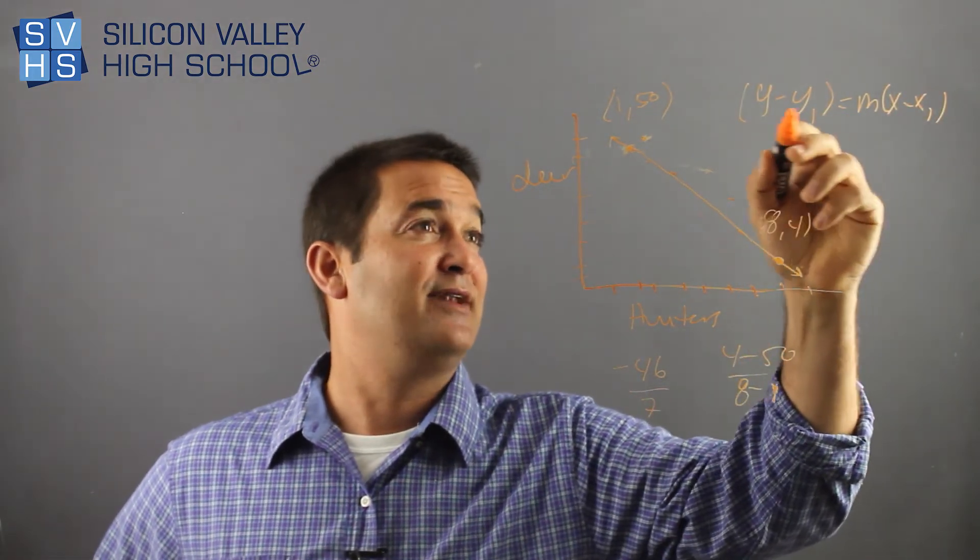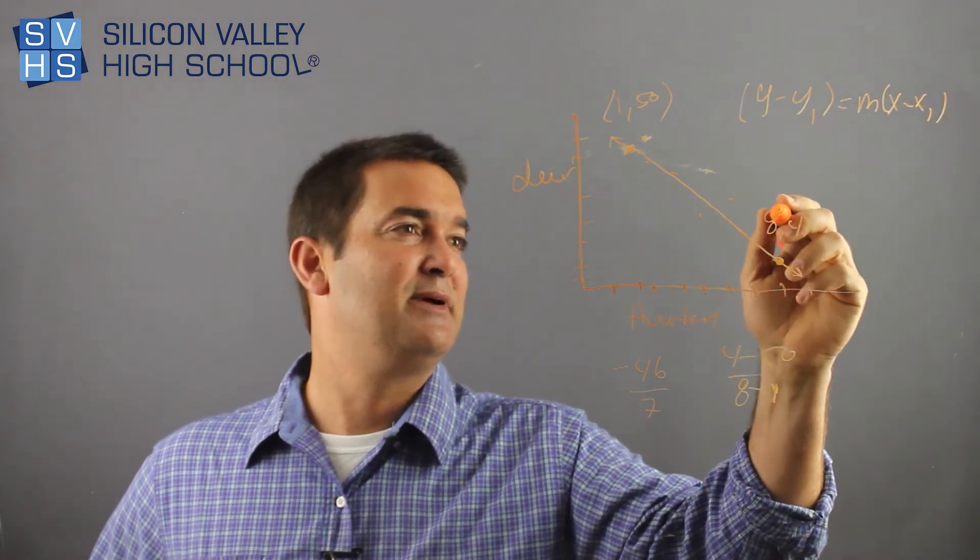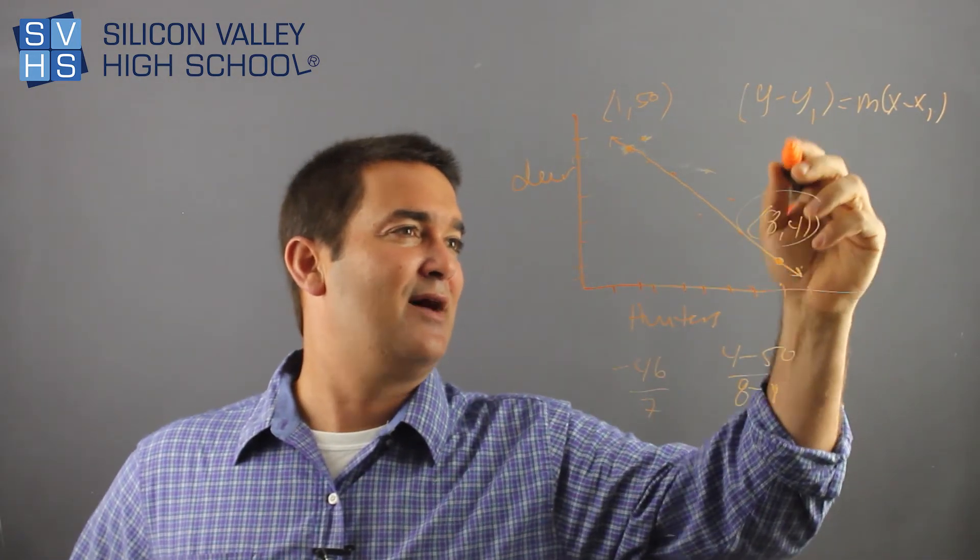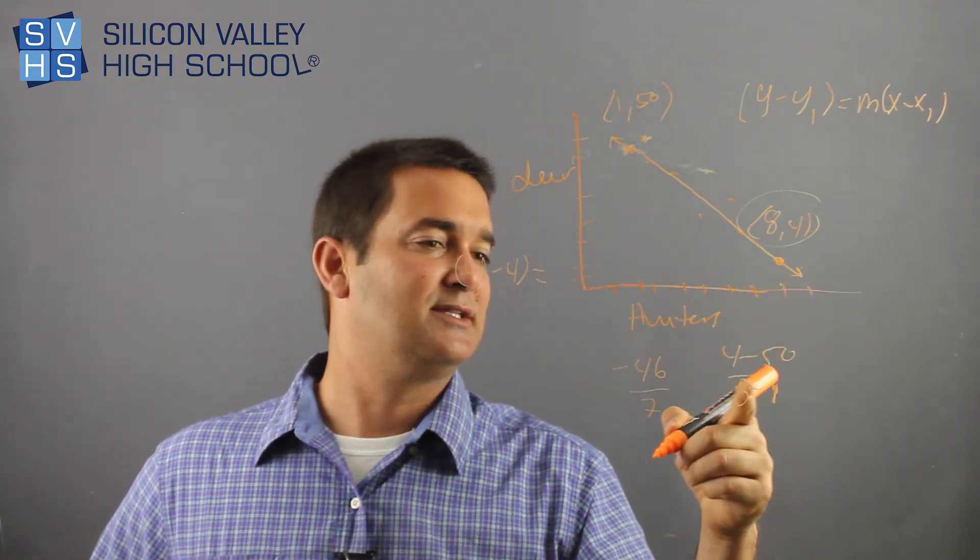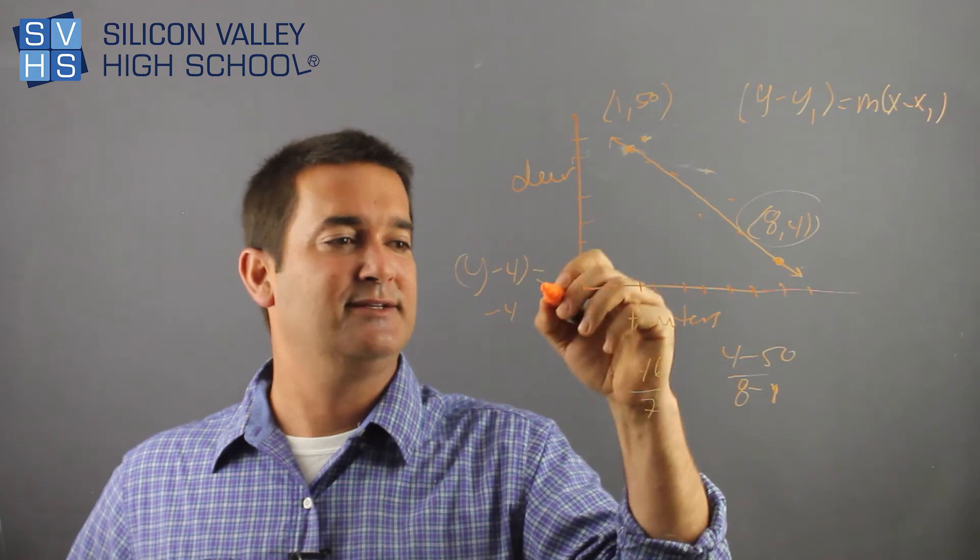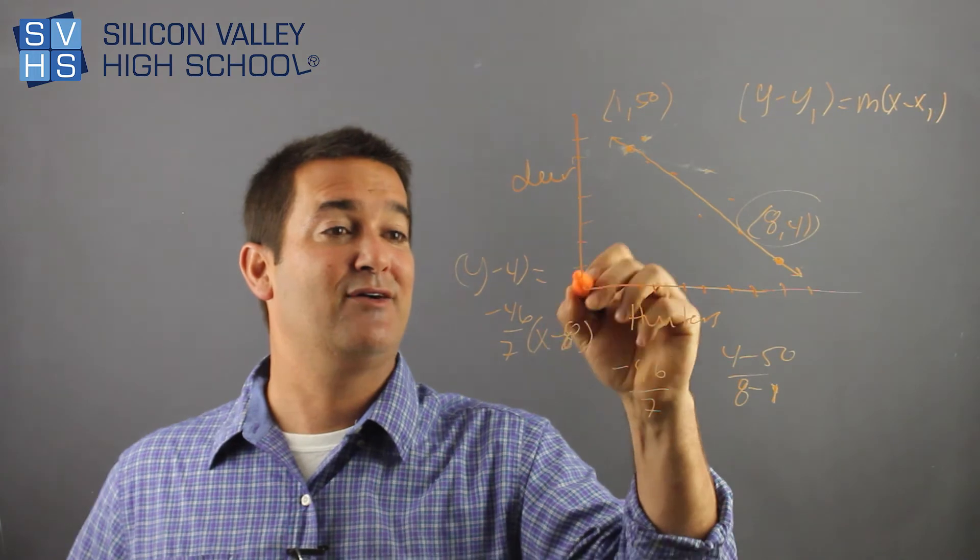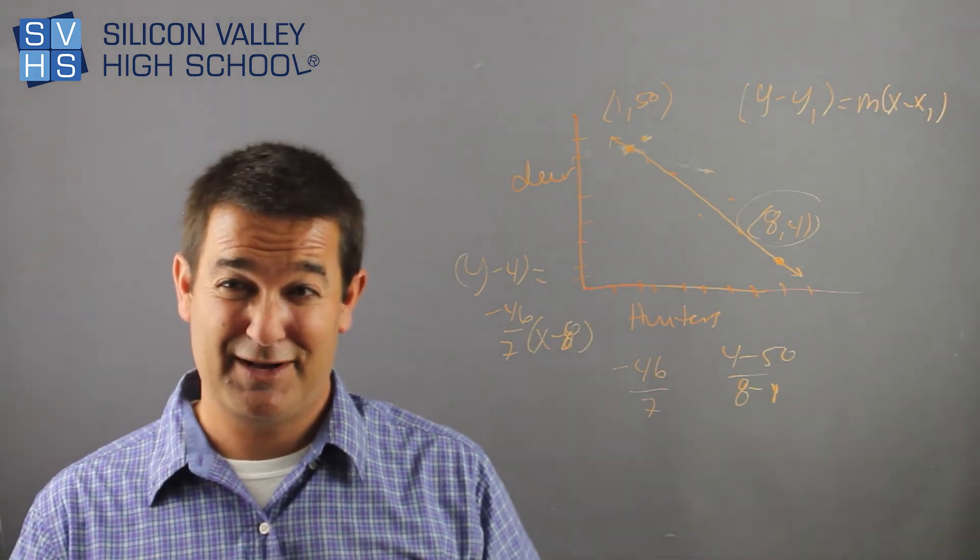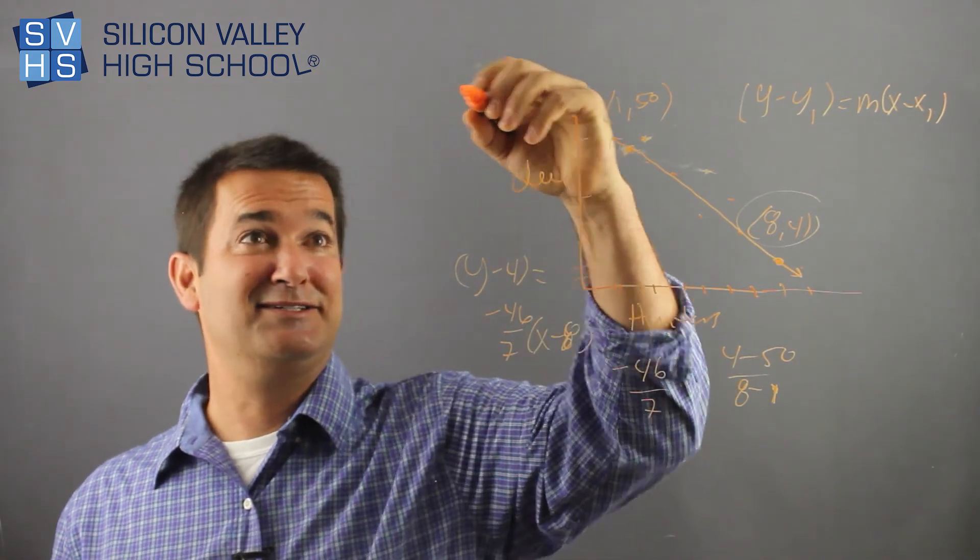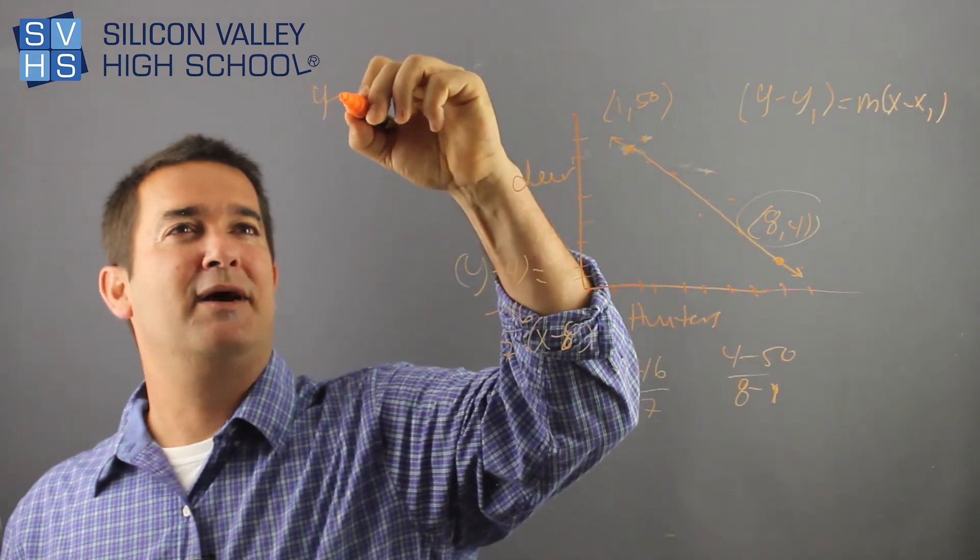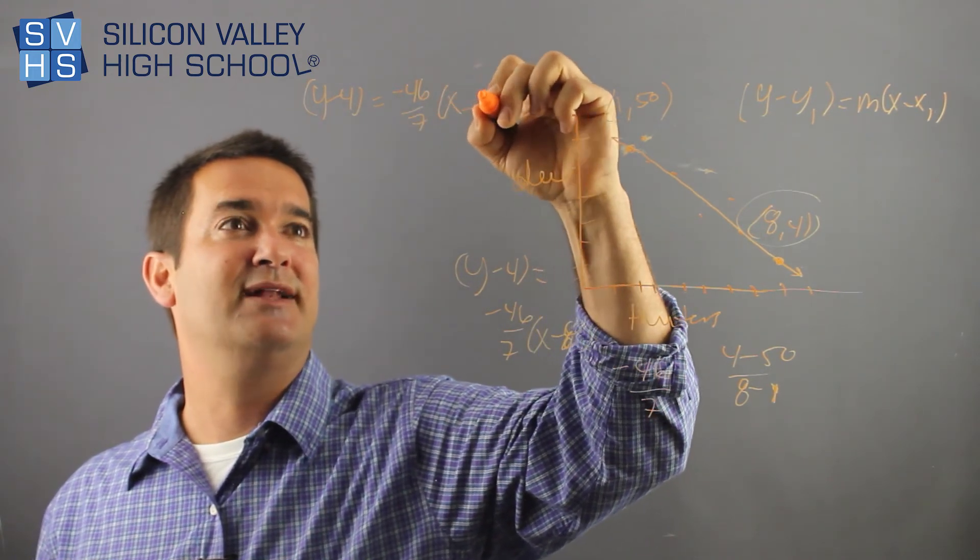So my slope we have. Now what are my y and my x values? You can pick either point. Does not matter. Let's pick this point, okay? So now I'd have y minus y. So I have y minus 4 equals slope, negative 46 over 7, times x minus my x value, 8. You like how I crammed it in there to make that as confusing as possible and as cluttered as possible? So that's it. You have your - okay, fine, I'll rewrite this because people are giving me a hard time. y minus 4 equals negative 46 over 7 times x minus 8.